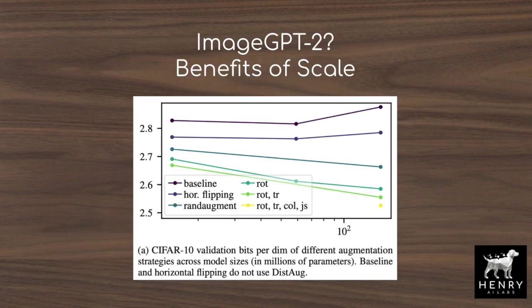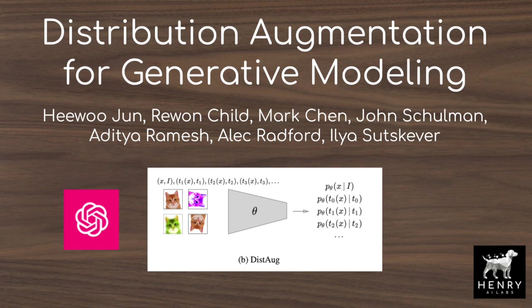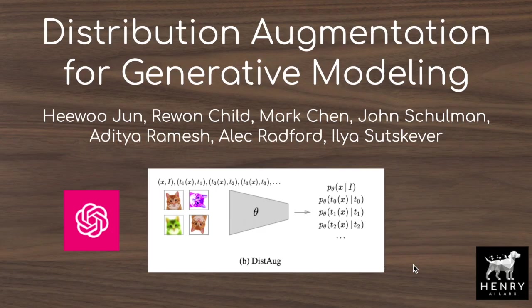The paper ends with a plot showing the benefits of more augmentation and more scale, hinting that this could be a huge contributor to an ImageGPT-2 sequel. This work suggests continued interest in developing these large-scale autoregressive generative image models and perhaps developing an ImageGPT-2 model.